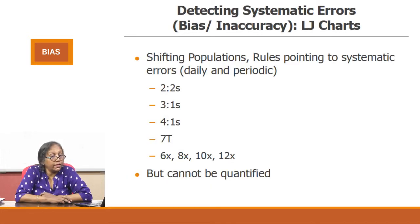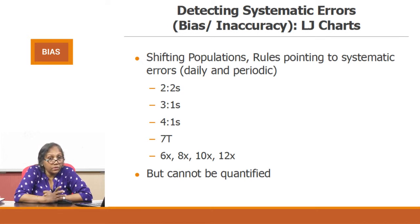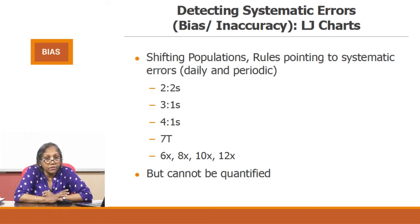The second mechanism is detecting systematic errors through LJ charts. There are three options: LJ, peer group target value, and EQA. The LJ rules which alert you to a buildup of systematic error are: 2-2S, 3-1S, 4-1S, 7-T, and the X rules — 6, 8, 10, and 12 rules. The problem here is you cannot quantify the errors, you can only know that there is an error. This is where the peer group becomes important. However, this does not invalidate the need to take corrective actions when you see errors building up.